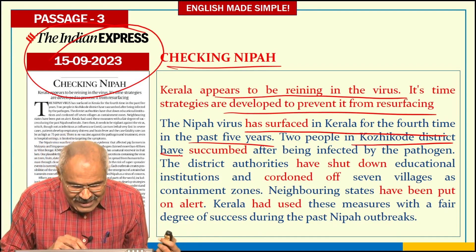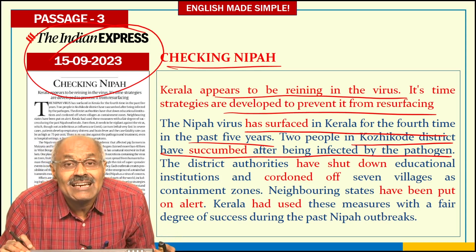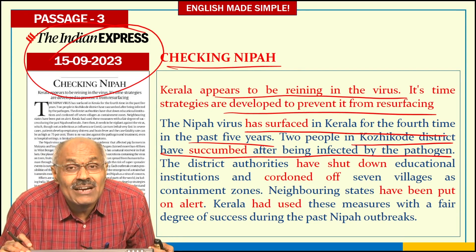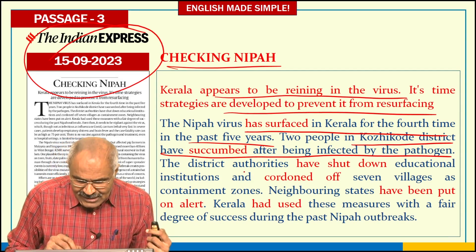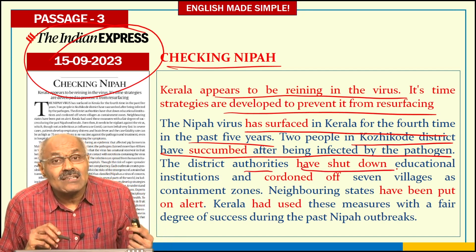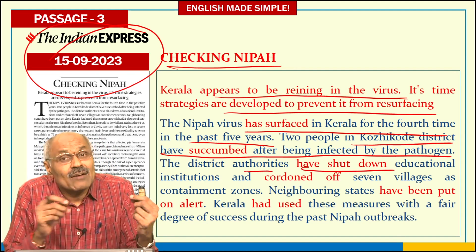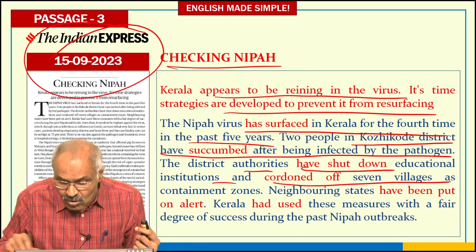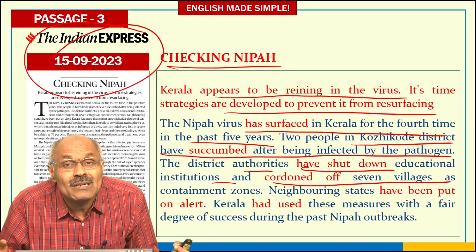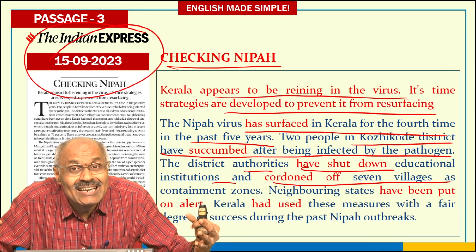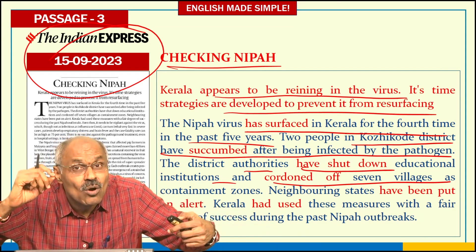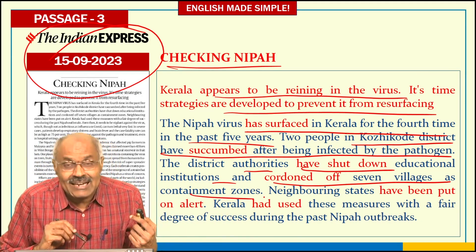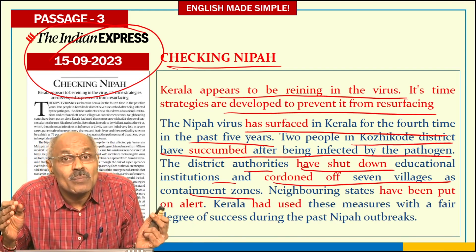Two people in Kozhikode District have succumbed — meaning died after illness. The district authorities have shut down educational institutions and cordoned off seven villages as containment zones. Cordoned off means preventing people from entering that area — like when a high dignitary visits, no outsiders are allowed in. Neighbouring states have been put on alert — those sharing borders with Kerala are on high alert.